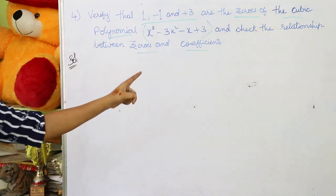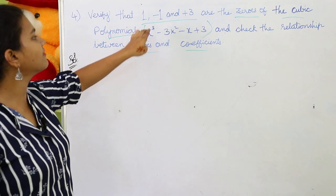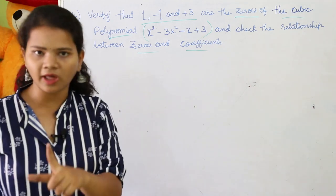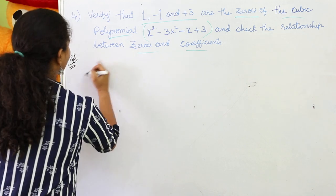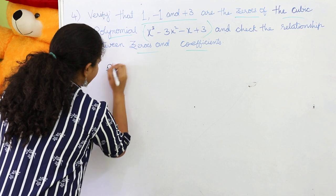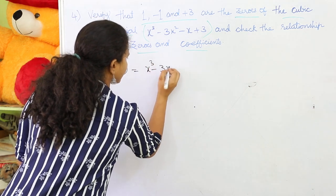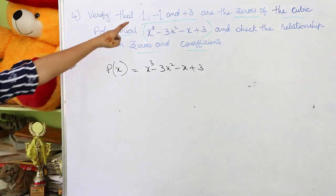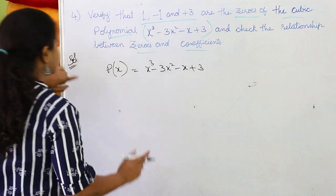We must verify whether these given values are actually zeros of the polynomial or not. So let us check whether these given values are zeros of the polynomial. Where p(x) = x³ - 3x² - x + 3. Let us firstly find out whether +1 is a zero of the polynomial or not.